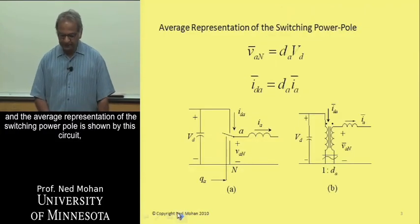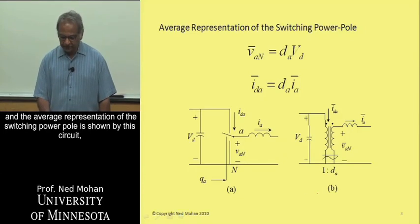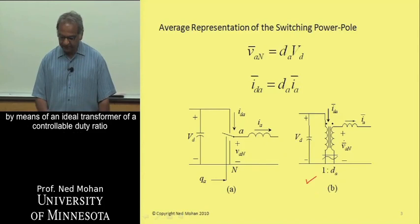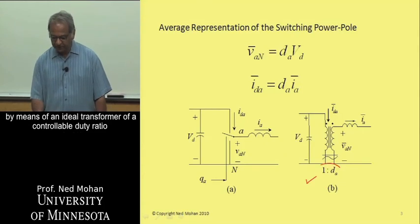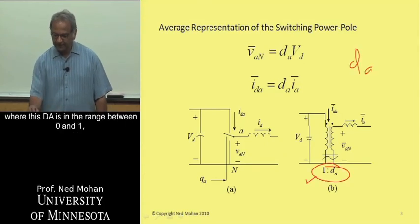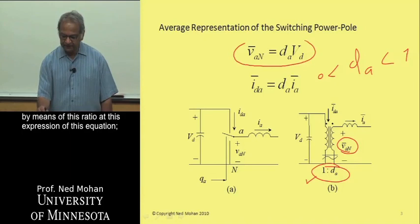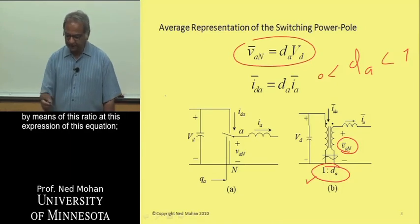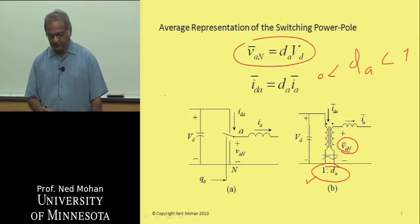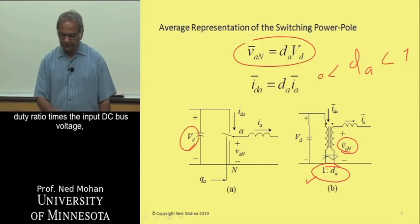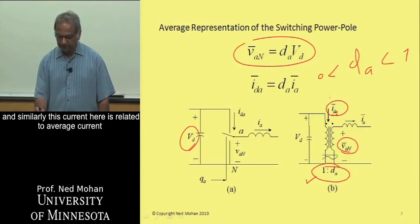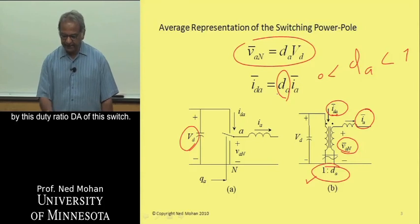And the average representation of a switching power pole is shown by this circuit by means of an ideal transformer of control-level duty ratio, where this DA is in the range between 0 and 1. And we can also represent the average that is produced at the current port by means of this expression, duty ratio times the input DC bus voltage. And similarly, this current here is related to the average current by this duty ratio, DA, of this switch.